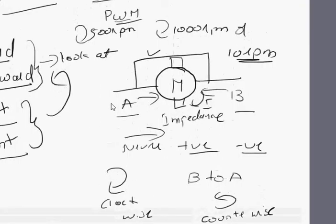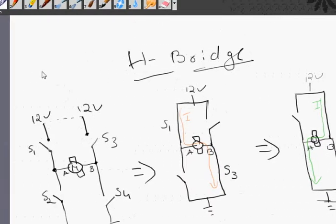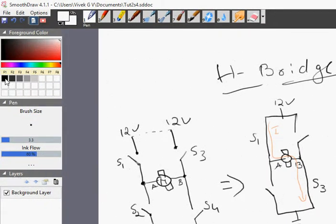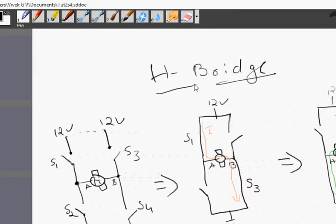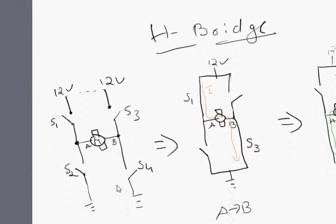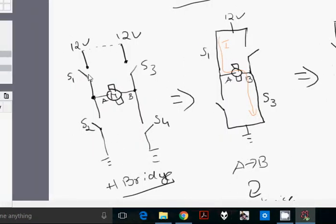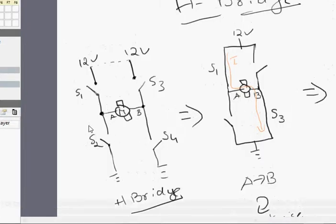To control a motor using an Arduino, to switch polarity we use something called an H-bridge. Let's look at the circuit of an H-bridge.